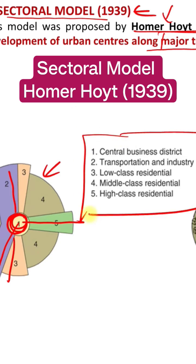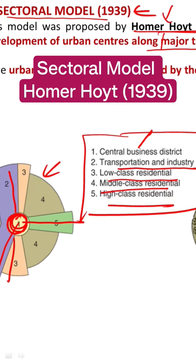This model gives a sectoral theory of differentiation in land use, which includes the central business district, transportation and industry, low-class residential, middle-class residential, and high-class residential. Urban morphology here is determined primarily by the network of routes — the highways, freeways, and connections of the old city with the outskirts. That is what is most important in this model.